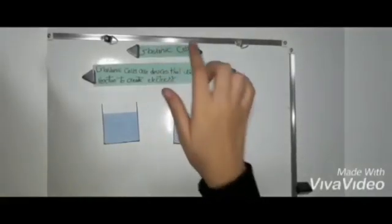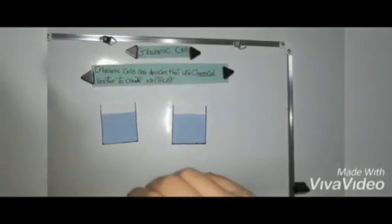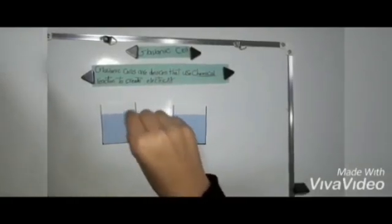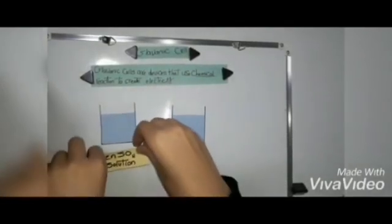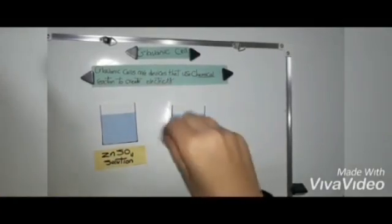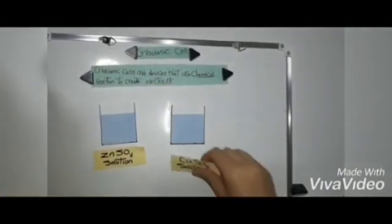About a part of galvanic cells, we have two containers containing water. One of them, I dissolve some zinc sulfate to make a solution. And the other, I dissolve some copper sulfate to make a solution.